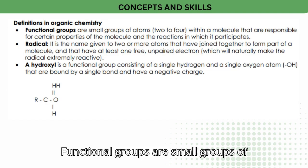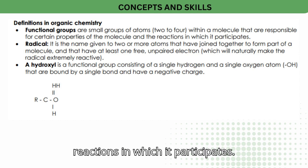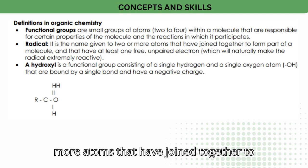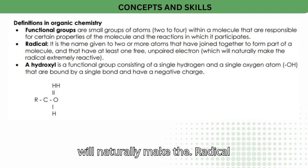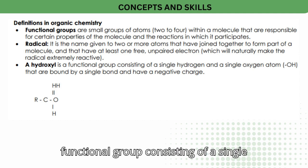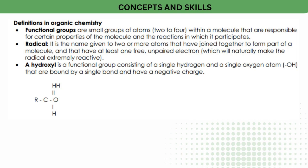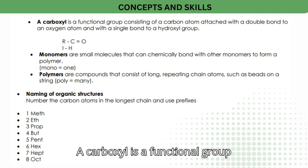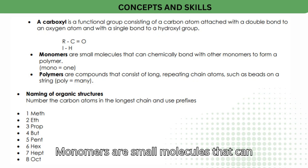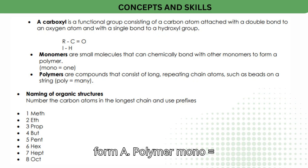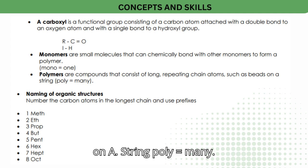Definitions in organic chemistry. Functional groups are small groups of atoms (2 to 4) within a molecule that are responsible for certain properties of the molecule and the reactions in which it participates. A radical is two or more atoms joined together to form part of a molecule with at least one free, unpaired electron, making it extremely reactive. A hydroxyl is a functional group consisting of a single hydrogen and a single oxygen atom bound by a single bond with a negative charge. A carboxyl is a functional group consisting of a carbon atom attached with a double bond to an oxygen atom and with a single bond to a hydroxyl group. Monomers are small molecules that can chemically bond with other monomers to form a polymer (mono = one). Polymers are compounds consisting of long, repeating chain atoms, such as beads on a string (poly = many).